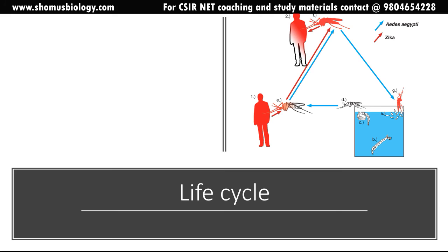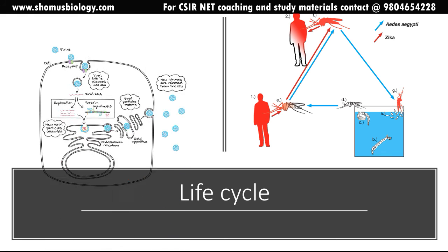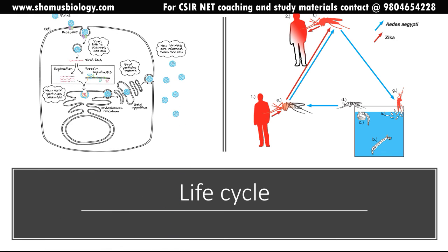Now let's look at the viral life cycle. There are two components: the host and reservoir cycle, already discussed, and the viral life cycle. The virus interacts with a receptor and is internalized via receptor-mediated endocytosis. After endocytosis, viral RNA is released into the cytosol. The RNA is used to make more copies and also to produce proteins. The proteins are inserted into the endoplasmic reticulum membrane, the RNA is packaged by the ER membrane, and viral genome assembly is completed in the endoplasmic reticulum.